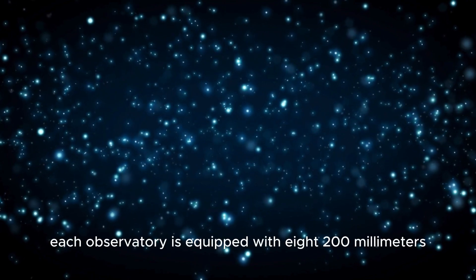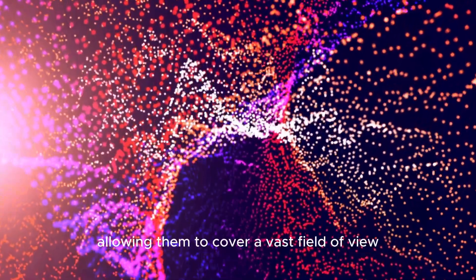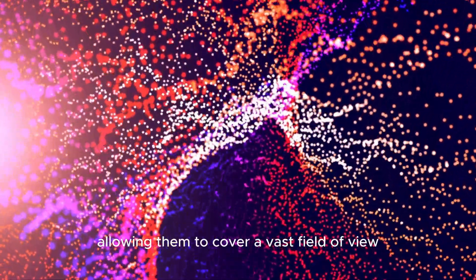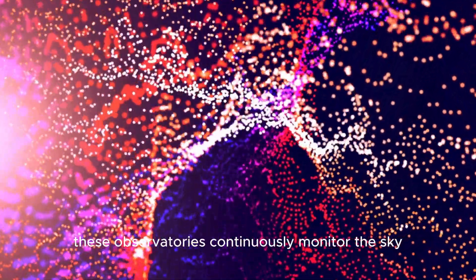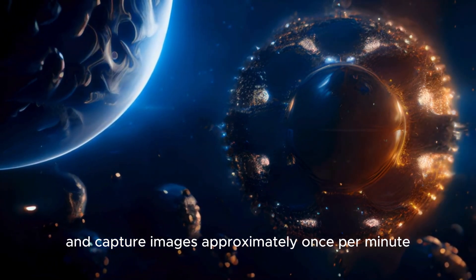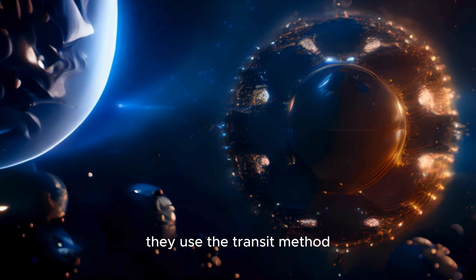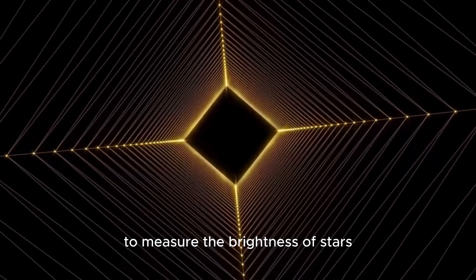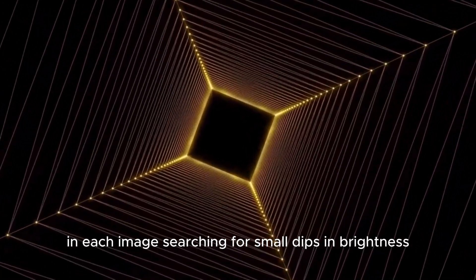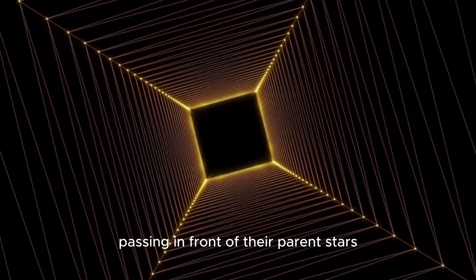Each observatory is equipped with eight 200mm f/1.8 lenses, allowing them to cover a vast field of view. These observatories continuously monitor the sky and capture images approximately once per minute, gathering about 100 gigabytes of data nightly. They use the transit method to measure the brightness of stars in each image, searching for small dips in brightness caused by larger planets passing in front of their parent stars.